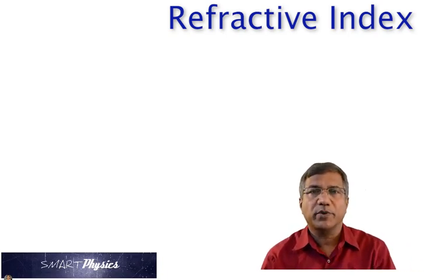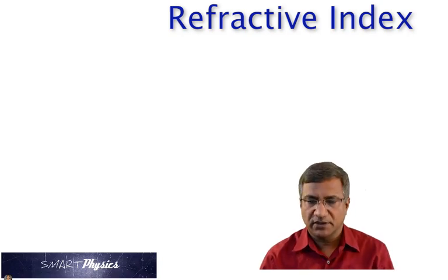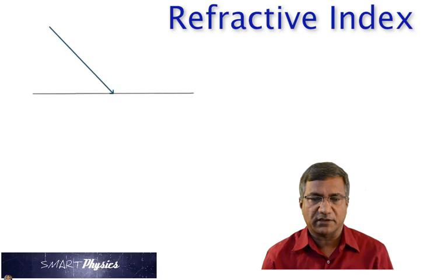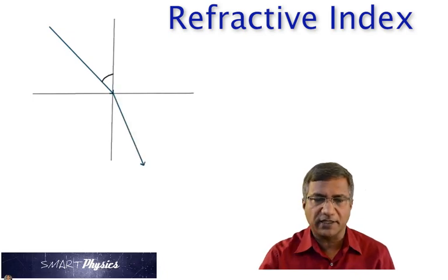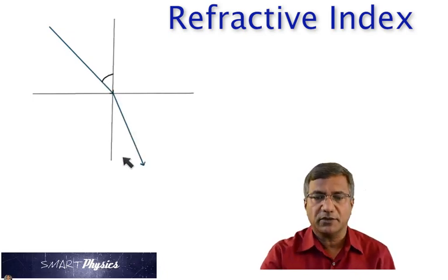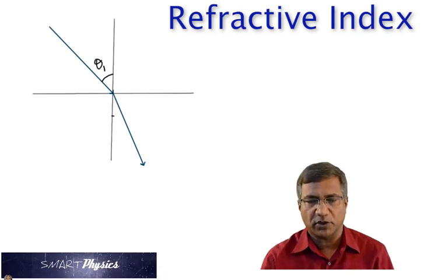So we can define something called refractive index based on the speed of light. So here is an incident ray in air coming into another material, let's say water.